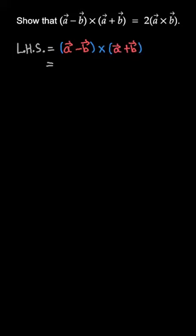Distributing over the cross product, we'll get: a × a plus a × b minus b × a minus b × b.